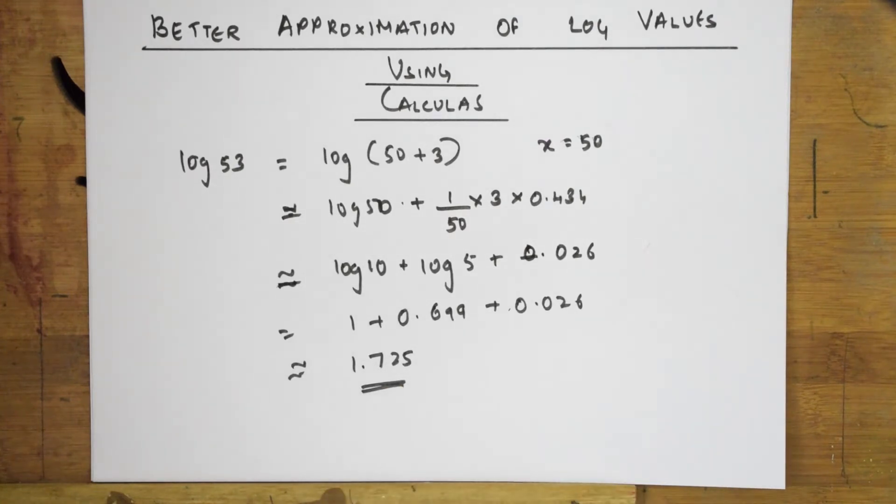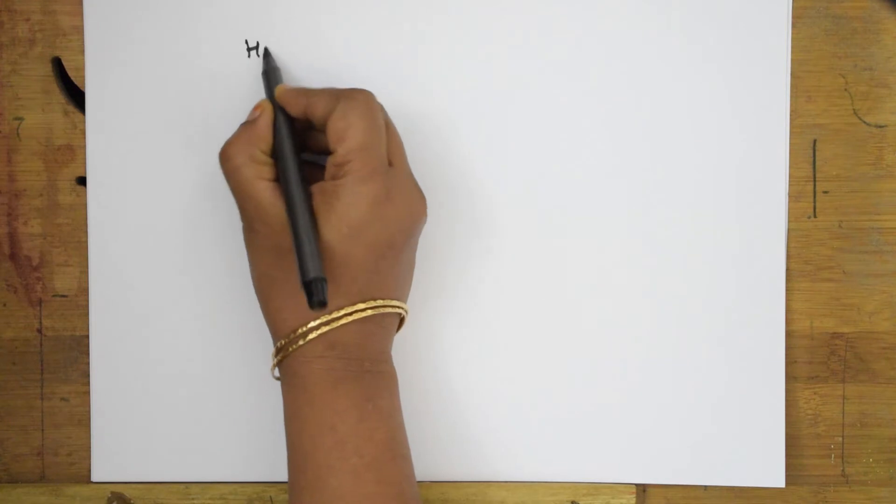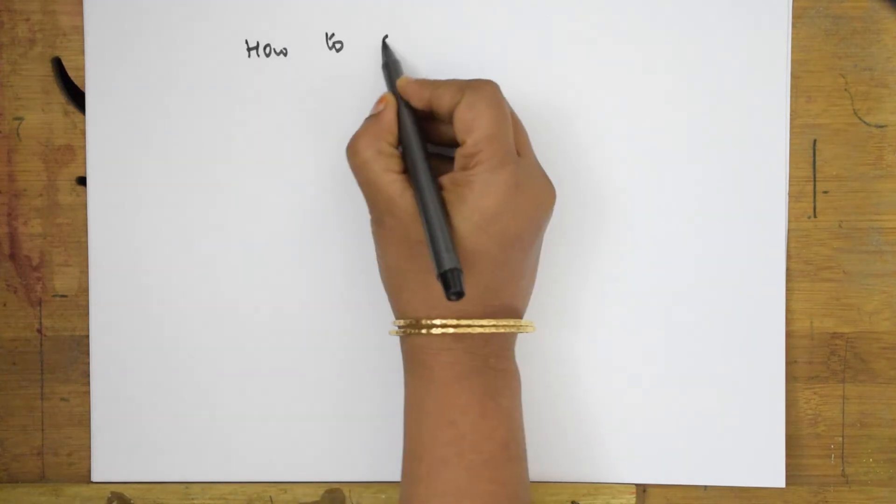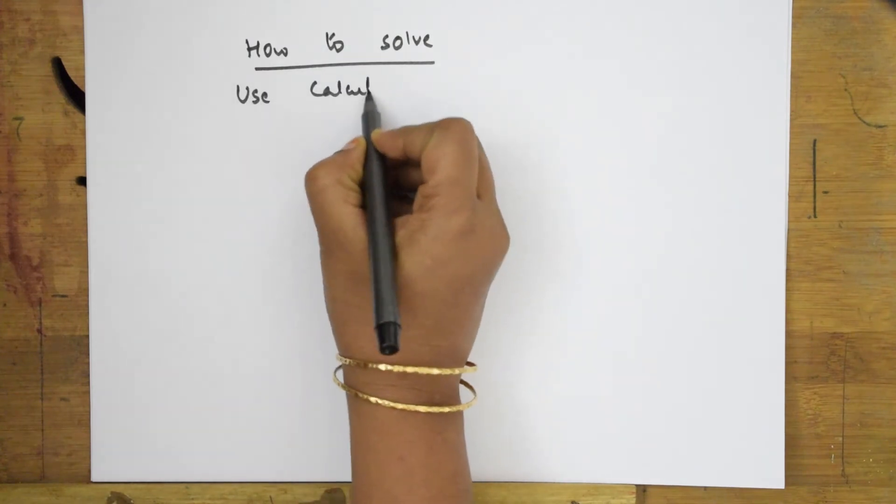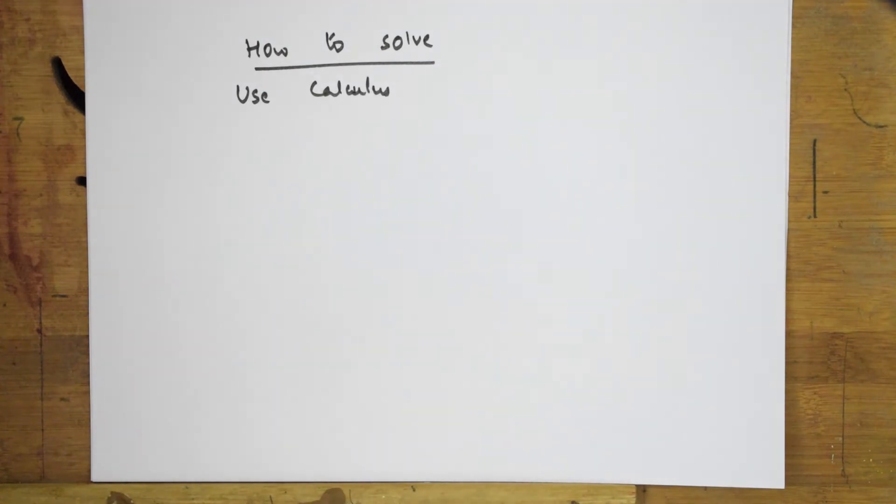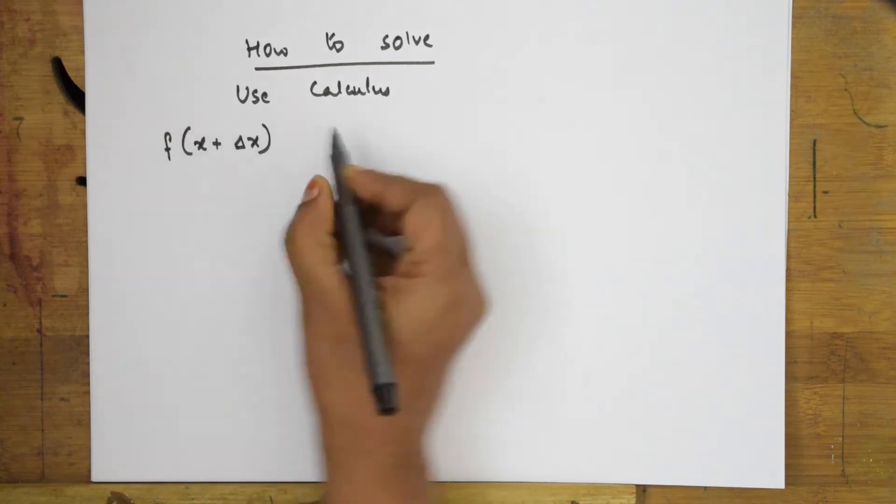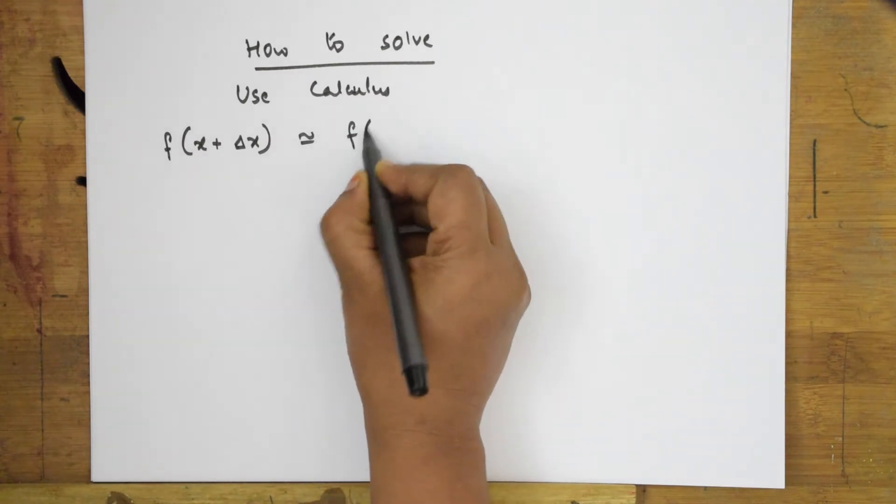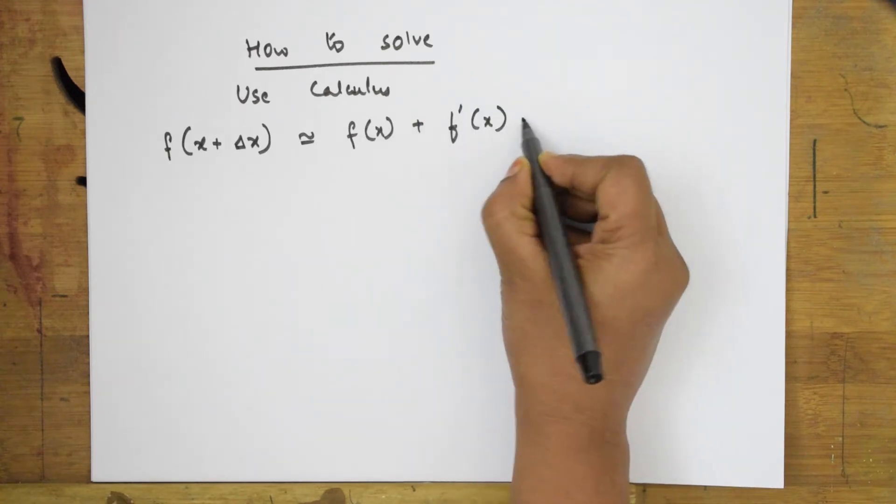Now, we will see step by step using Calculus method or the Calculus formula and apply to this and solve. First of all, when I have to use Calculus, let us see how to solve this above formula. I am using Calculus here. Now, according to Calculus, where we do the differentiation and integration part, here, according to Calculus, the formula is f(x + Δx) is approximately equal to f(x) + f'(x) × Δx.